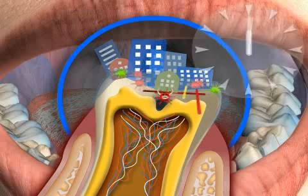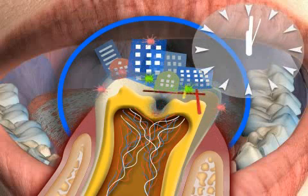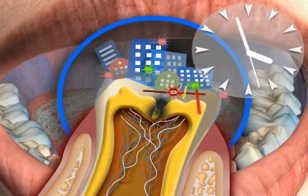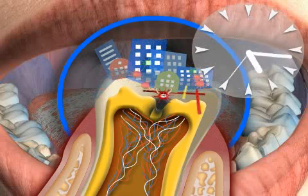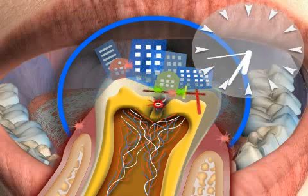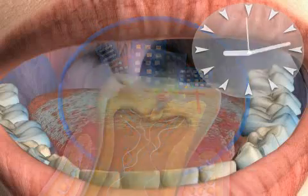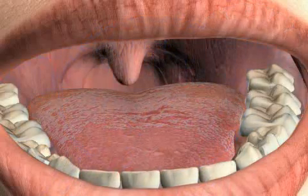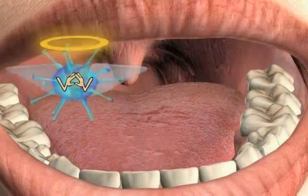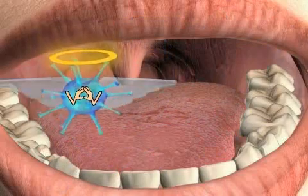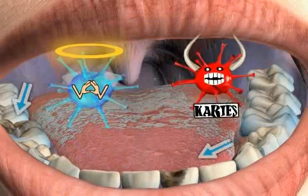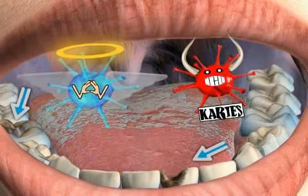The formation of mature plaque usually takes about 24 hours. That's the amount of time it takes for originally commensal and symbiotic bacteria to turn into germs that are pathogenic. If unorganized, mouth bacteria is not harmful. Only mature plaque can cause caries and periodontitis.